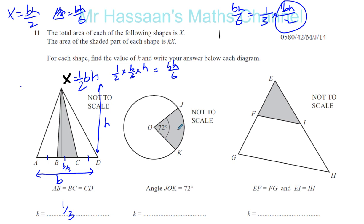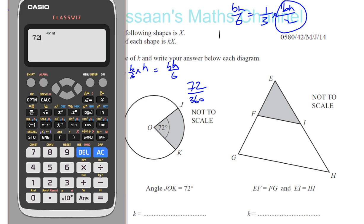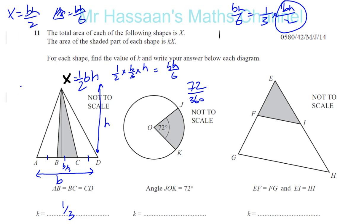For the second question, it's pretty simple. The area of the whole circle is πr², called x. The area of the shaded part is a fraction of x — the same as 72 over 360. So k equals 72/360. Even though it doesn't say to simplify, it's better to do so. 72/360 simplifies to one fifth. So k equals one fifth.